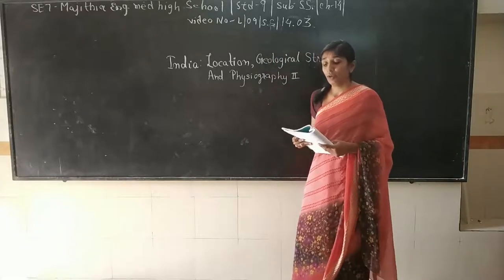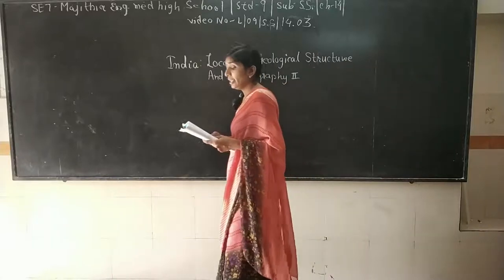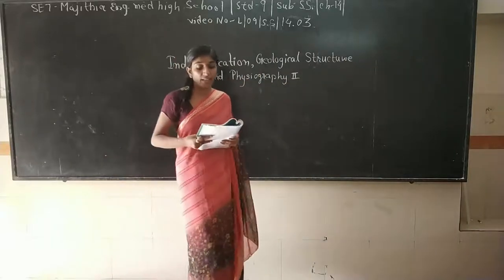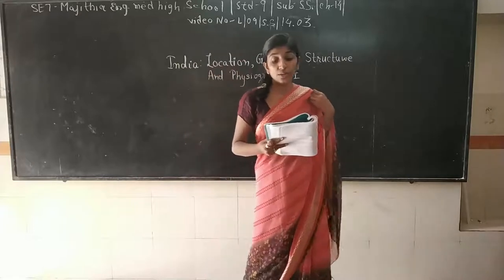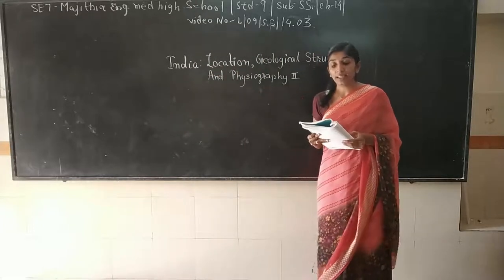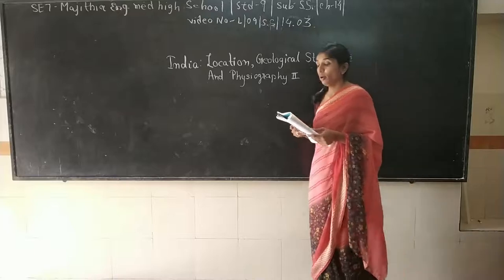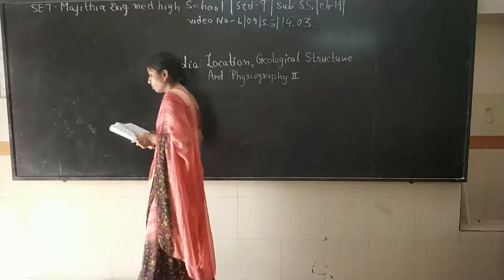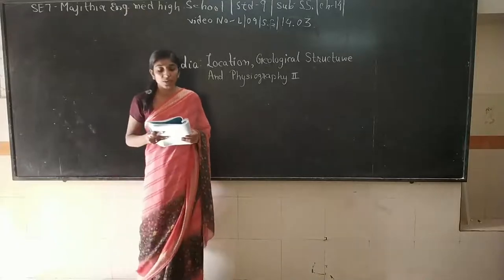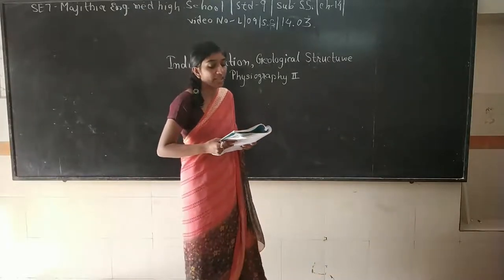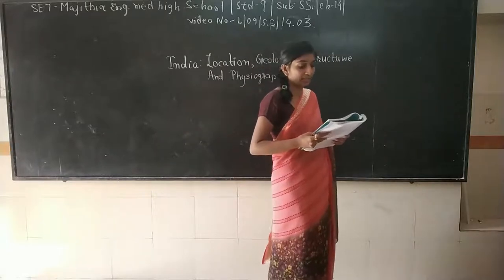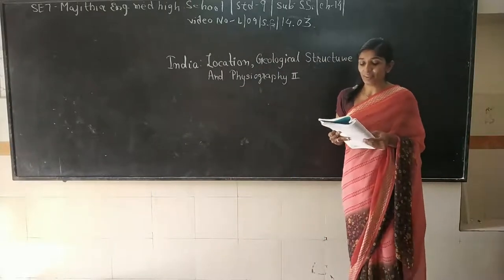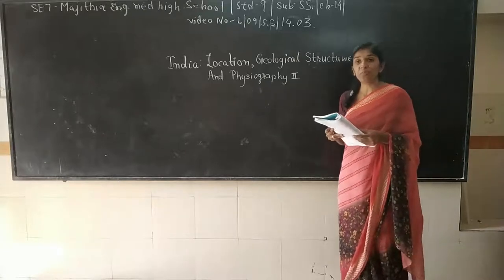Next is soil. We know that soil is a basic resource for any agriculture. Besides agriculture, soil is also very important for other purposes. Soil is a thin layer of organic and inorganic matter on the surface of the earth. Soil is related to the surface of the earth in the same way as an apple with its skin. This thin layer of the earth's crust is called soil.